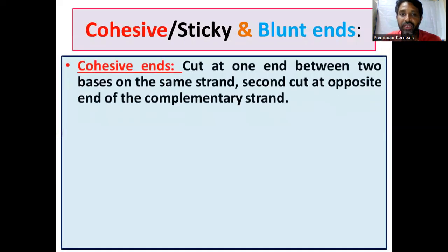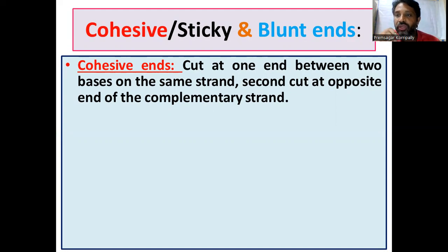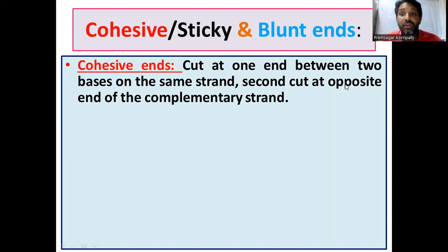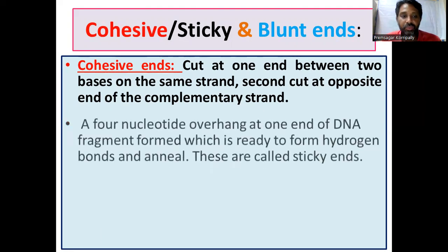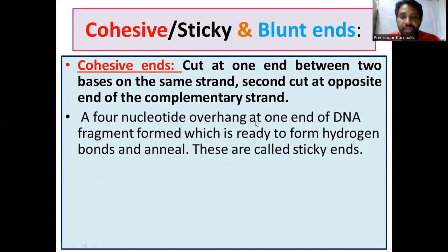Here we can see the definition of cohesive ends and blunt ends. Cohesive ends: to release the DNA fragment from its source, two phosphodiester bond breaks are required. The first cut is at one end, between two bases on the same strand. The second cut is at the opposite end of the complementary strand. A four-nucleotide overhang at one end of the DNA fragment is formed, which is ready to form a hydrogen bond and anneal. These are called sticky ends.